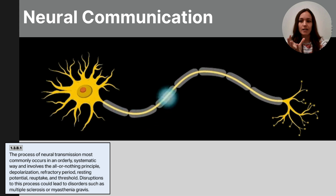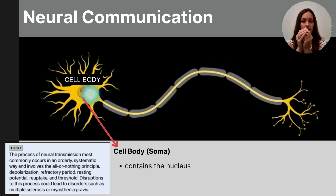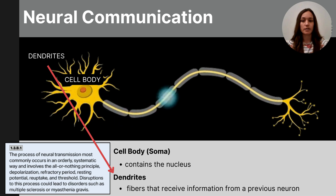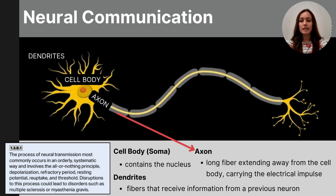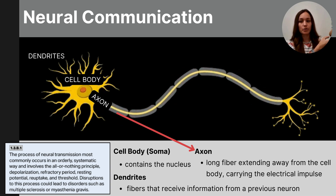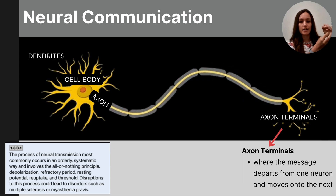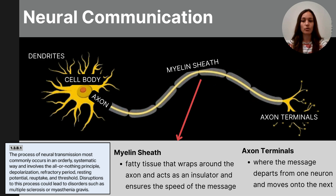Neurons differ slightly in shape and size, but they're all variations of the same theme. They have a cell body containing the nucleus, and fibers called dendrites that receive stimulation or messages from previous neurons. From the cell body there is a long extension called an axon, which extends away from the cell body — an electrical impulse shoots through the axon. The axon ends with axon terminals, sometimes called terminal branches or terminal buttons. The axon is encased in a fatty tissue called the myelin sheath, which acts as an insulator ensuring the speed of the message.